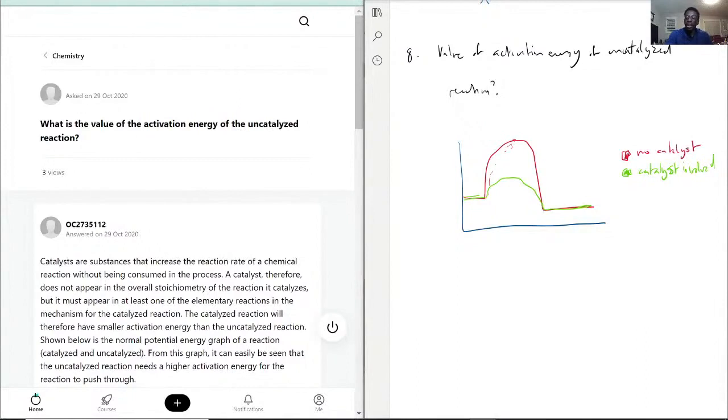So that would be how you answer this question, because there is no value per se, because each reaction has different activation energy. You just know that it would be more than if a catalyst was involved. There will be more energy needed when there's no catalyst involved than when there is a catalyst involved.